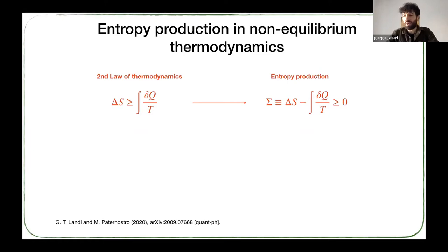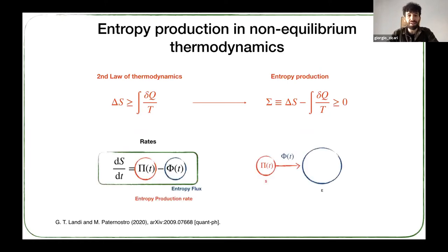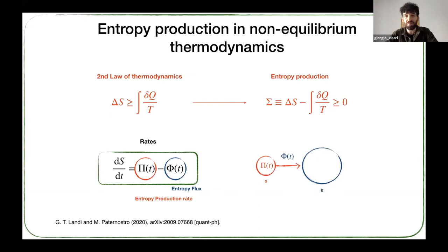Since we are looking at non-equilibrium thermodynamics, we are interested in rates. If we rearrange the previous equation, we can write dS/dt, which is given by pi minus phi, where phi is the entropy flux — the entropy flowing from the system to the environment — and pi is the entropy production rate, which is the entropy produced within the system and characterizes the process intrinsically.